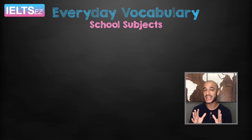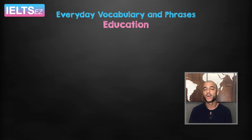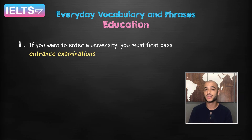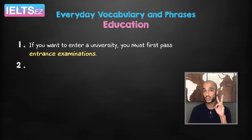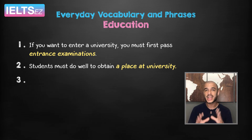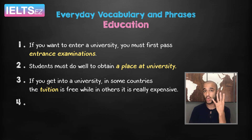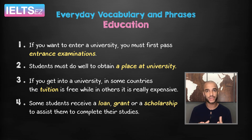I will give you some example sentences containing everyday vocabulary and phrases related to education. One: if you want to enter a university, you must first pass entrance examinations. Two: students must do well to obtain a place at university. Three: if you get into a university, in some countries the tuition is free while in others it is really expensive. Four: some students receive a loan, grant or a scholarship to assist them to complete their studies.